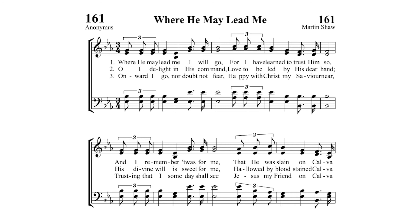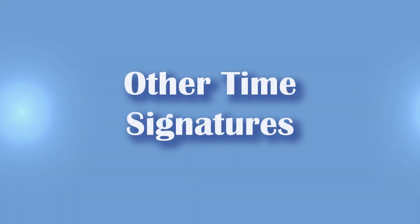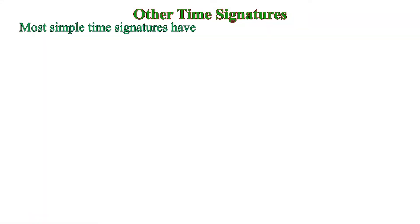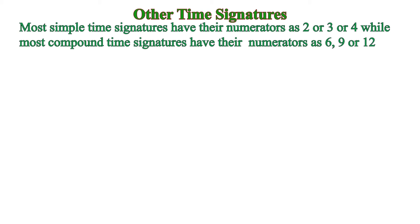In similar ways, duplets are also used. Now, regarding other time signatures: most simple time signatures have their numerator as two, three, or four — 2/4, 3/4, 4/4. While most compound time signatures have their numerators as six, nine, or twelve — 6/8, 9/16, 12/8.